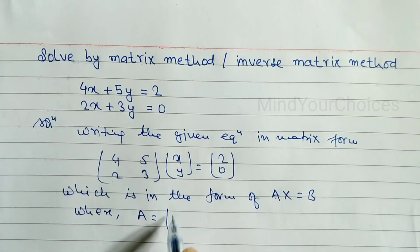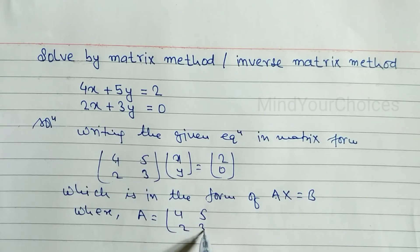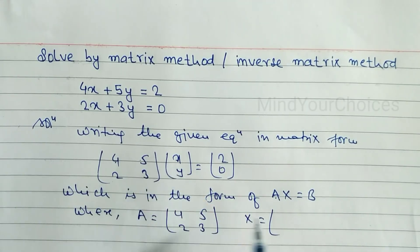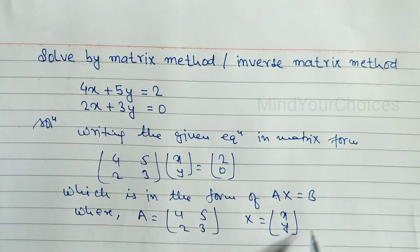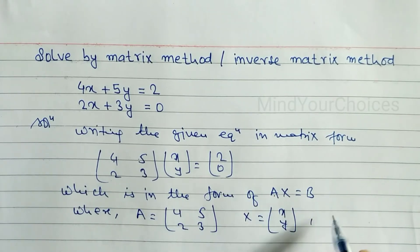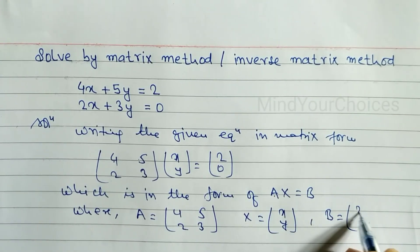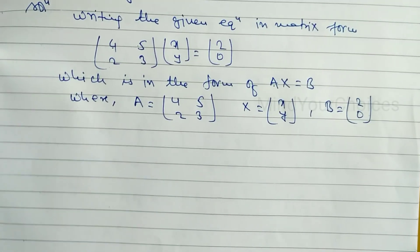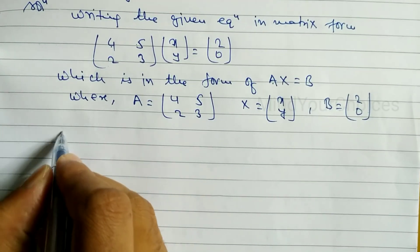Here, A is the 2×2 coefficient matrix: A = [[4, 5], [2, 3]]. X is the variable matrix [x, y], and B is the constants matrix B = [2, 0].